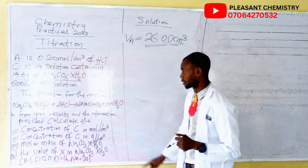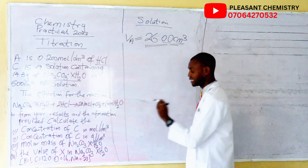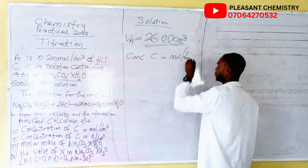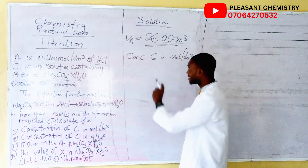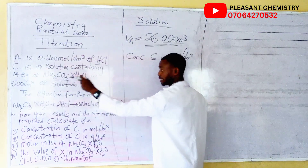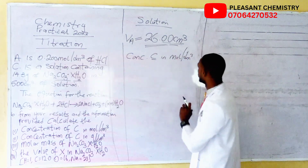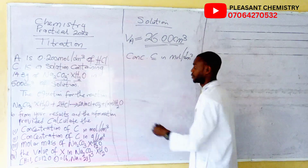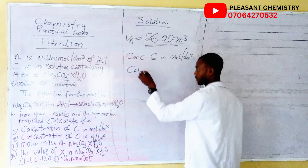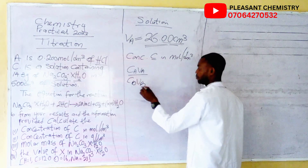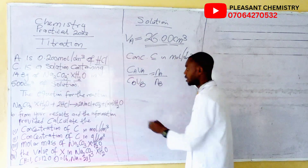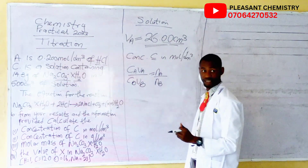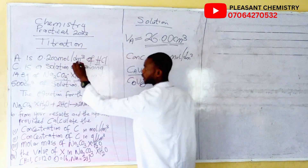The first question asks us to calculate the concentration of C in mole per dm³. Note that C is the base given. So if you want to calculate this, we can use the formula: CA × VA / CB × VB = NA / NB. Our CA is the concentration of the acid — A represents acid and B represents base. Concentration is measured in mole per dm³; that is the unit for molar concentration.